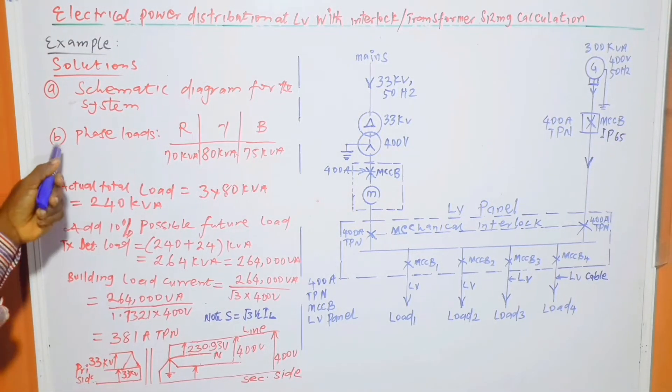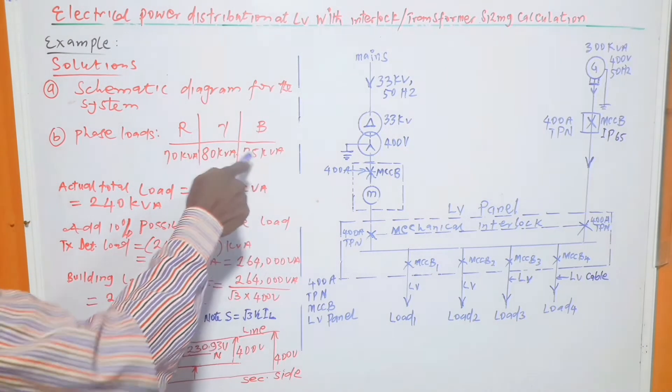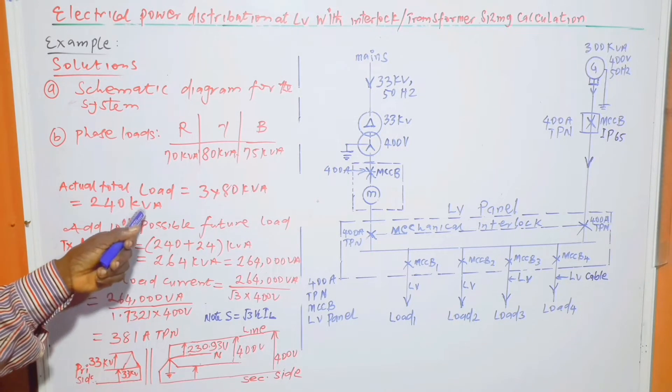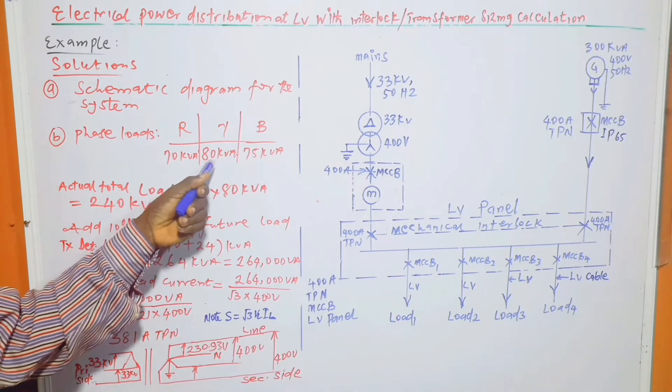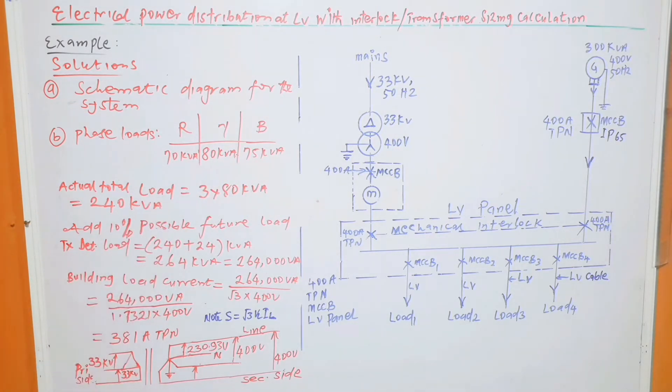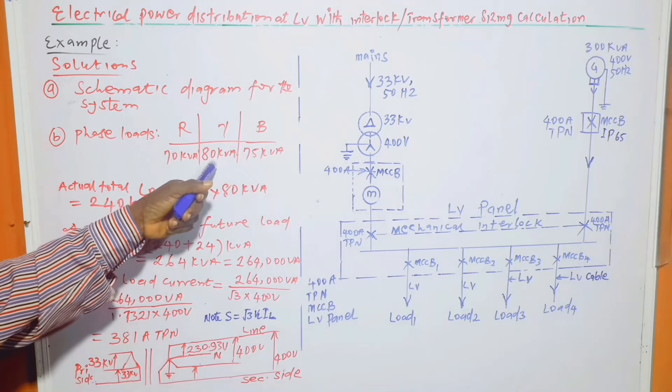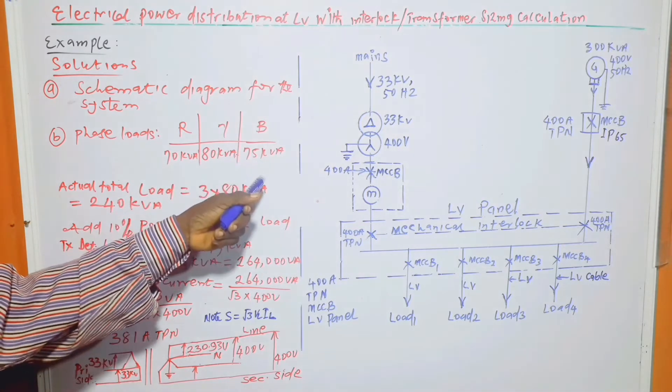Part B: Phase load - red phase 70 kVA, yellow phase 80 kVA, blue phase 75 kVA. Actual load is equal to 3 times 80 kVA, which is equal to 240 kVA. This 80 kVA is the highest phase load, as I explained in one of my previous videos having to do with transformer load calculation slash transformer size calculation. In this situation, you will multiply 3 by the highest phase load, which is 80 kVA. You shouldn't add the algebraic sum of the phase loads.